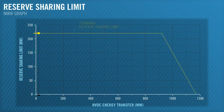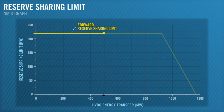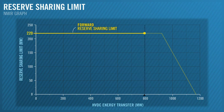We'll start with the forward reserve shearing limit. The maximum forward reserve shearing limit is the HVDC control band minus the modulation risk. In this case, that's 250 megawatts minus 30 megawatts, making 220 megawatts.